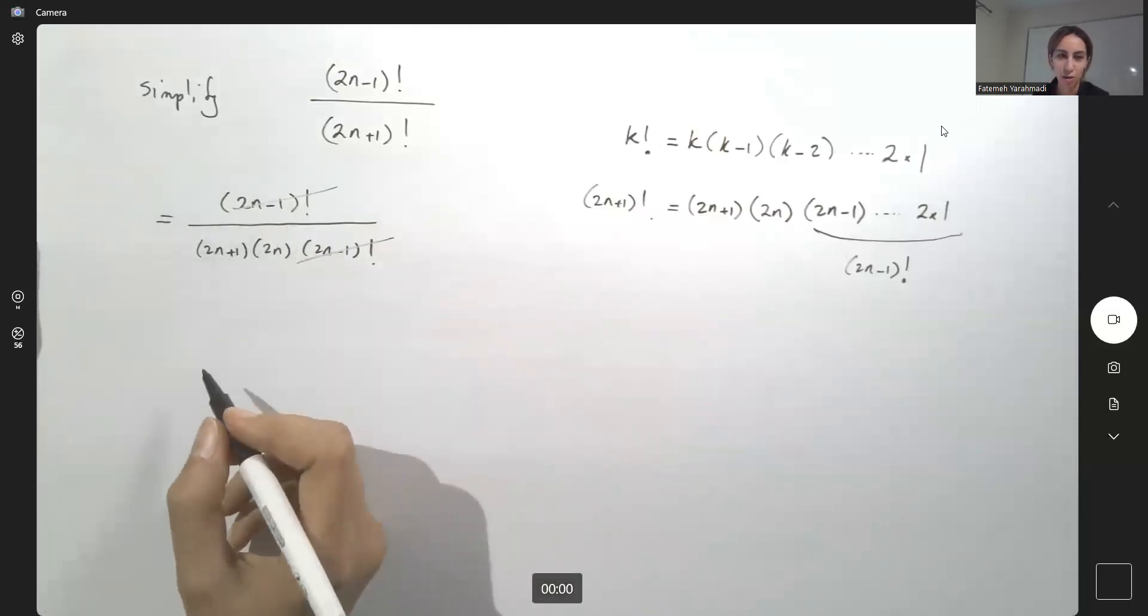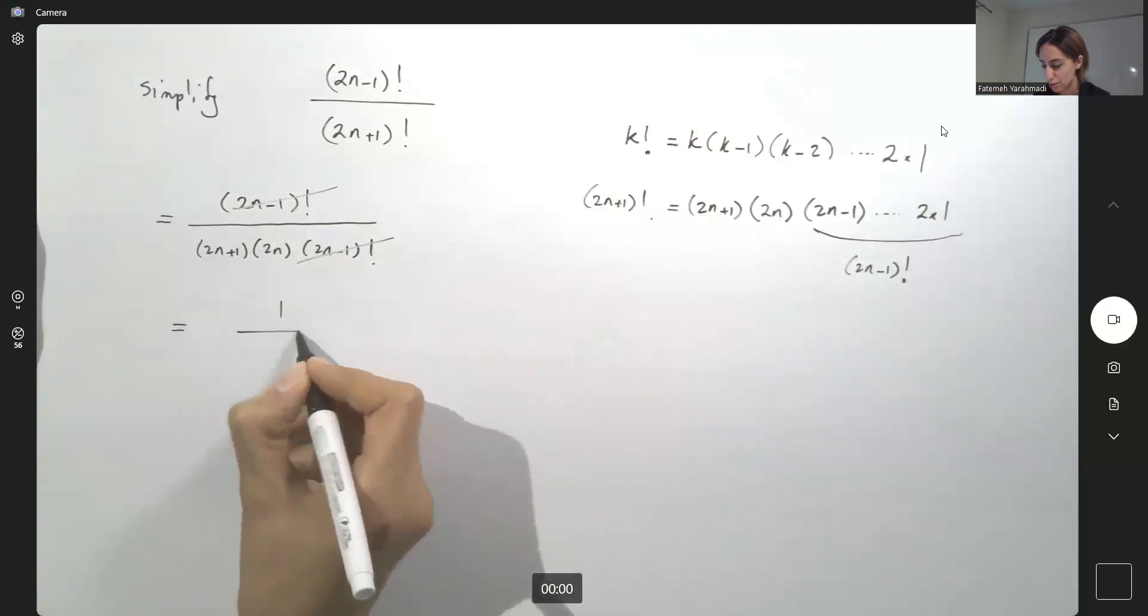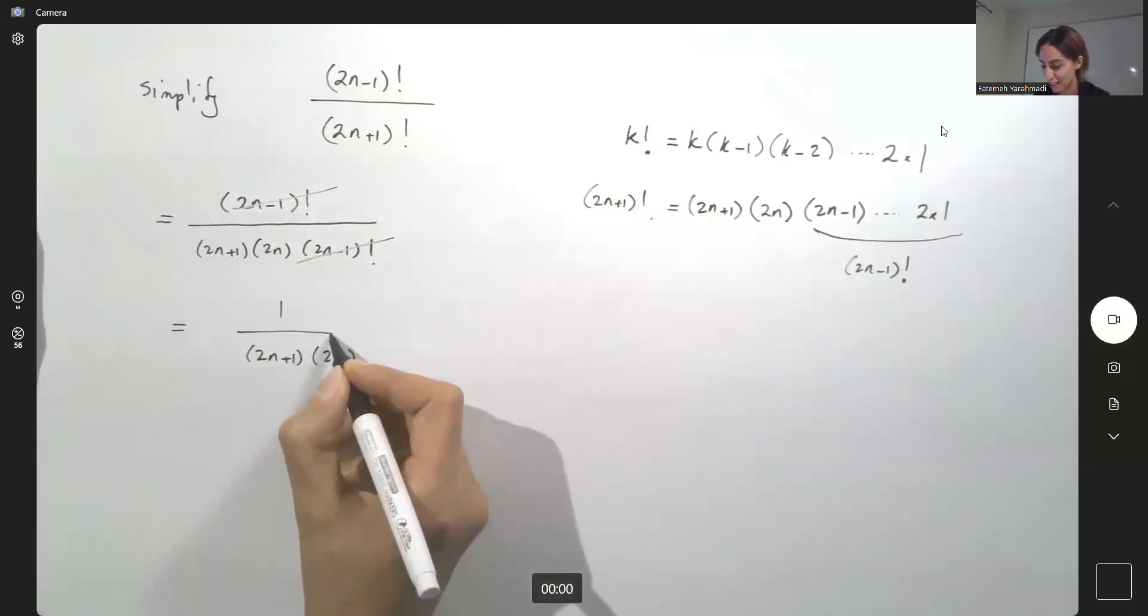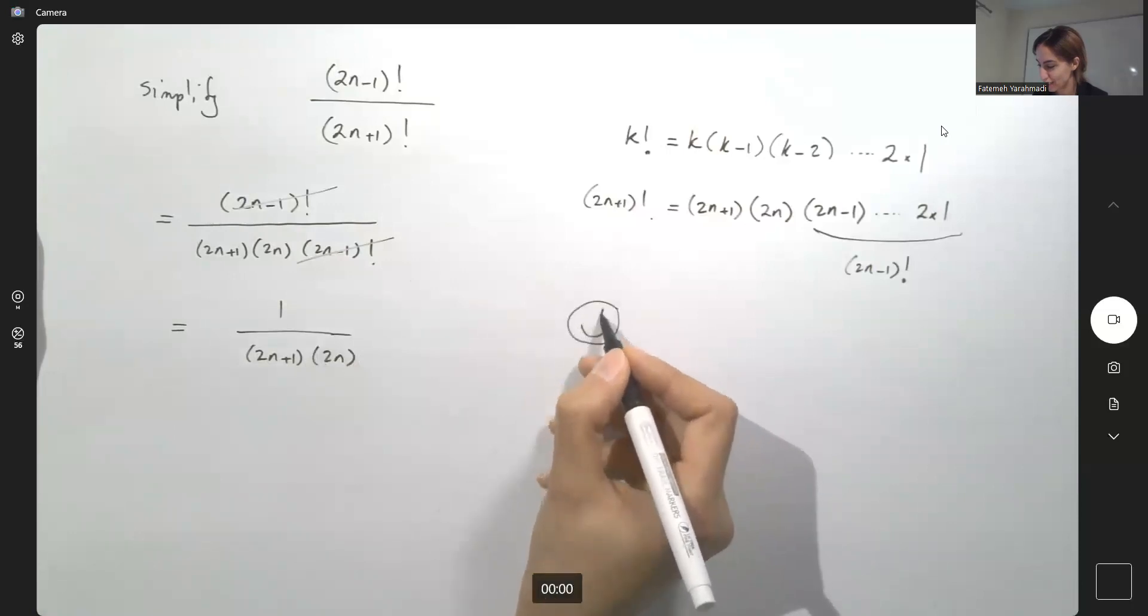cancel all numerator and denominator common factors. We're left with 1 divided by 2n plus 1 times 2n. There we go.